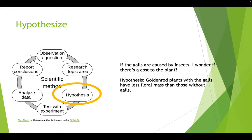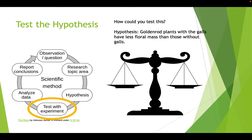Once you have your hypothesis, you need to figure out how you can test it. If your hypothesis is specifically that goldenrod plants with the galls have less floral mass than those without, how could you design an experiment to test that? Take a moment, pause the video, and think about how you might test that.